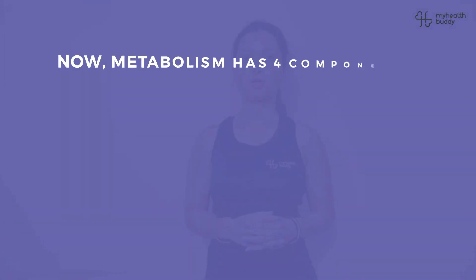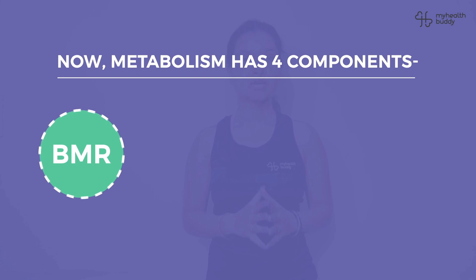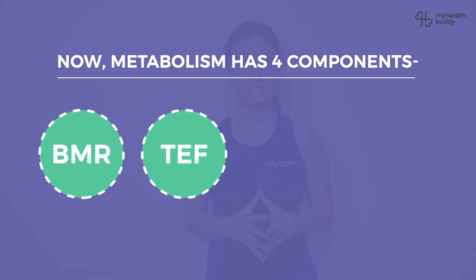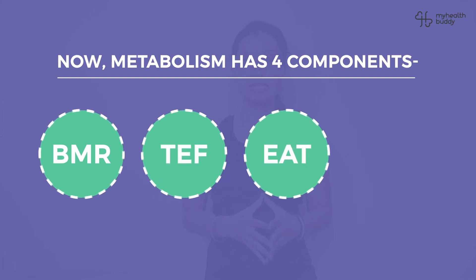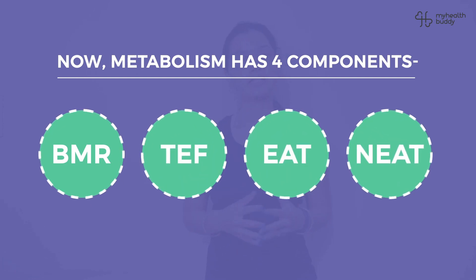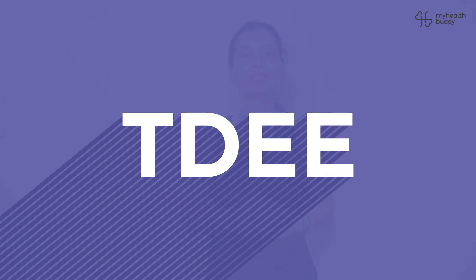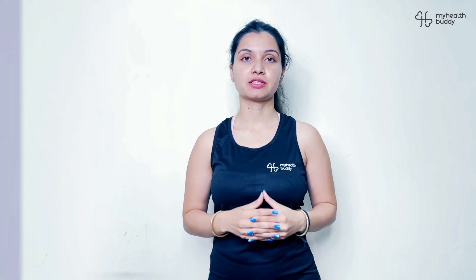Metabolism has four components: BMR, TEF, EAT, and NEAT. And the total of all of these is our TDEE. BMR, that is the basal metabolic rate, is the amount of calories required at rest.